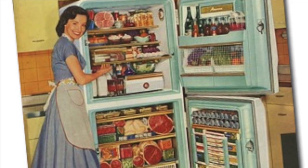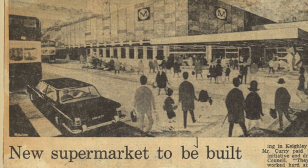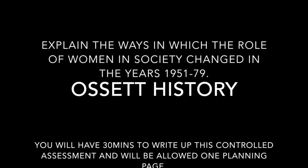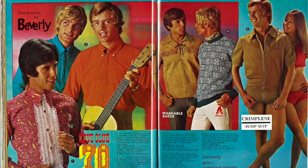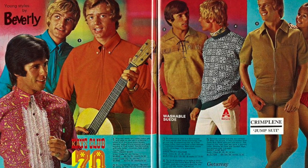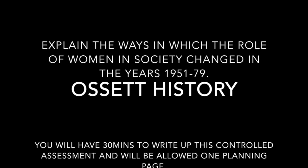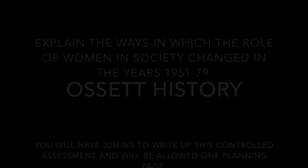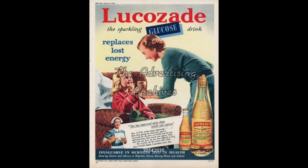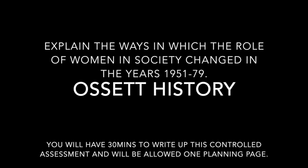Shopping also became easier. The 1960s brought the age of the supermarket, so women only had to visit one place. The shopping catalogue — the equivalent of Amazon — meant housewives could even shop from the comfort of their own home. However, advertisements and catalogues reinforced the traditional role of women, so for many women their role didn't change that much, even if their traditional role got easier.